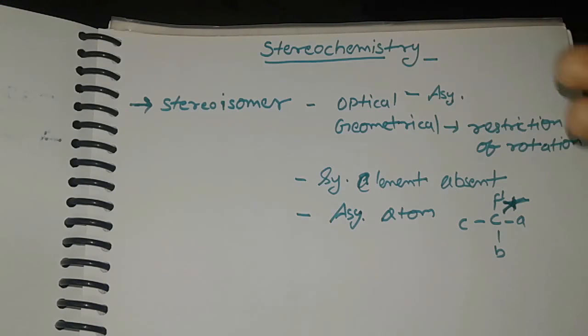Since we're talking about organic compounds, we'll call this chiral carbon. So in stereoisomers, there are two types: optical and geometrical. Optical isomers are due to asymmetry, and geometrical are due to restriction of rotation. The asymmetry is of two types: first is absence of any type of symmetry elements, and second is presence of asymmetric atom.